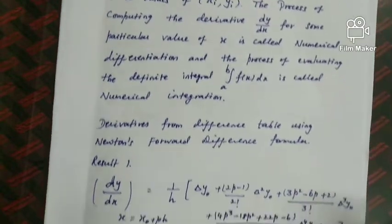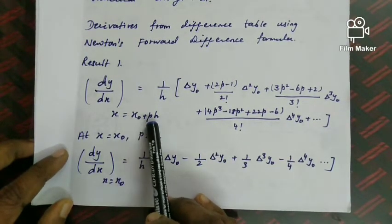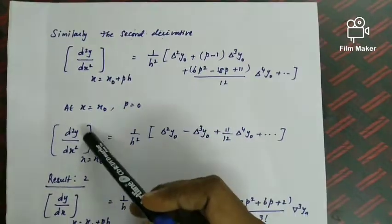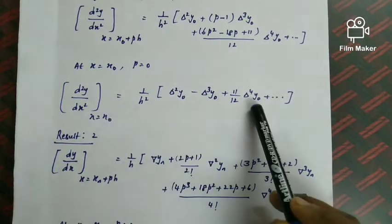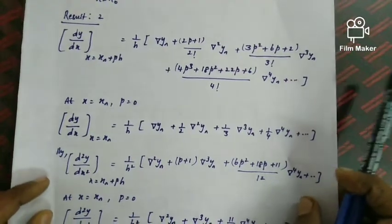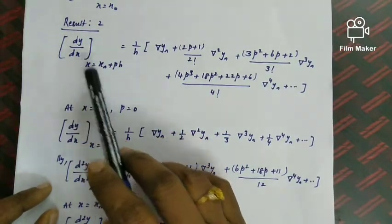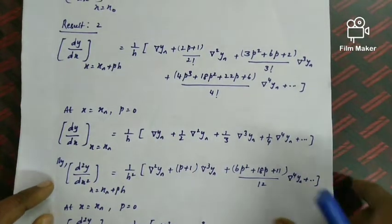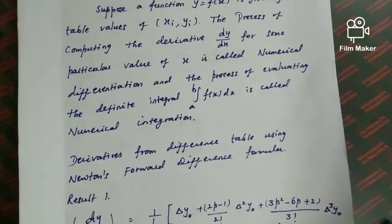To summarize: for numerical differentiation, use forward difference (Result 1) to find dy/dx and d²y/dx². If p = 0, use the simplified first result; if p ≠ 0, use the general result. Similarly, to find dy/dx and d²y/dx² using Newton's backward difference (Result 2), if x equals xₙ (end of table) and p = 0, use the second result for the second derivative.